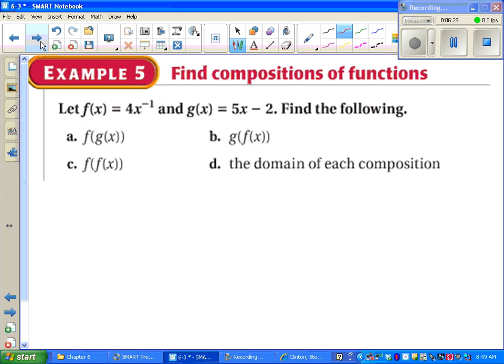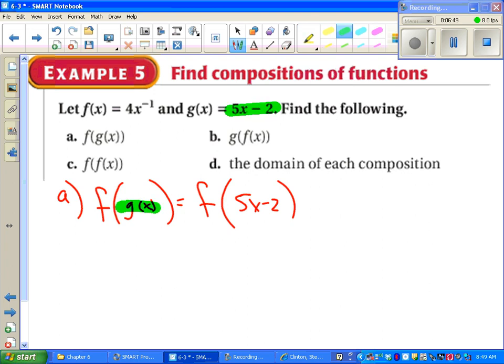So part A says find F of G of X. We just go step by step. As always we work on the inside out for composition. First thing I'm going to do is replace G of X with whatever G of X is. G of X happens to be 5X minus 2. So I'm just replacing. Now for F of 5X minus 2, I'm going to go back up to the F function. And plug in 5X minus 2 wherever I see X. And I'm done, kind of.